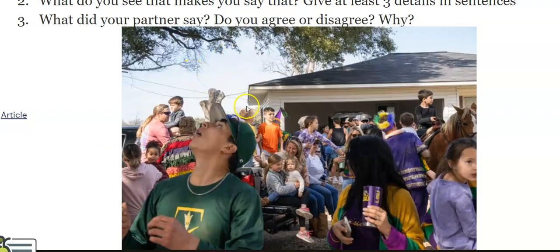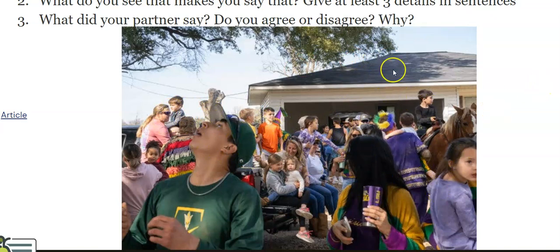They're going to answer some questions. They need to take a guess in one or two sentences — what's their prediction? Then they need to give three details: 'I think this because they're looking up, they look excited.' Then they're going to ask their partner what they think it is. When you're ready, click on the article link in the Google Slides.